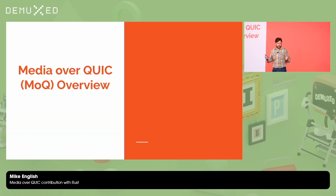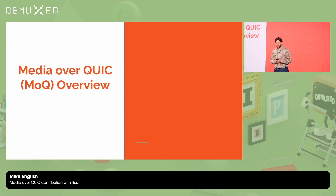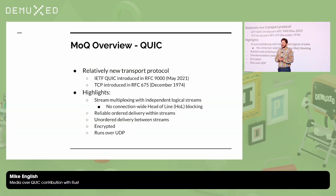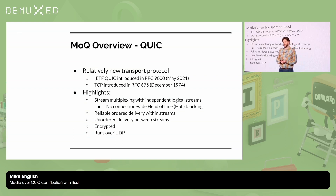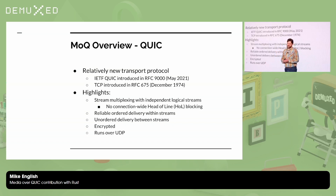So let's get into what is Media over QUIC. Let's start with QUIC. QUIC is the underlying transport protocol we're dealing with here — it's a relatively new transport protocol. For context, TCP was introduced in the 70s, and QUIC was formalized in RFC 9000 in 2021. So it's been a while since we've had this level of change.